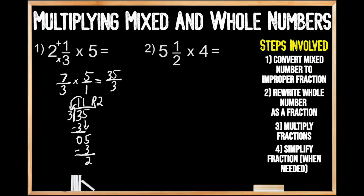Now we're going to write our mixed number. We could make 11 whole groups of three out of 35, so our whole number is 11. The denominator hasn't changed — it's still thirds — so we write a denominator of three. Our numerator is the remainder, which is two, giving us 11 and two thirds. So when we multiply two and one third times five, we get 11 and two thirds.